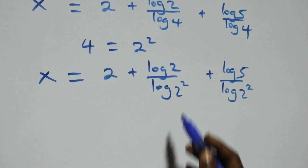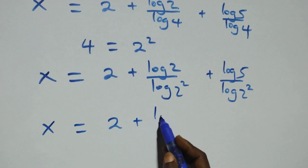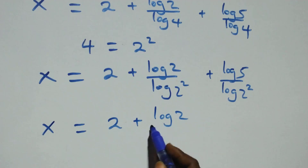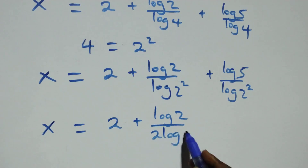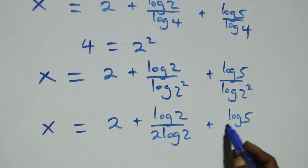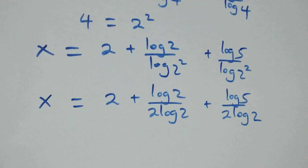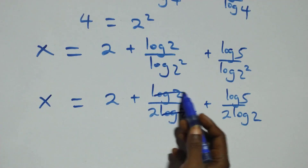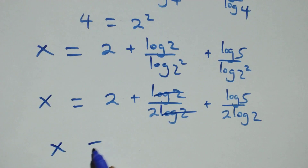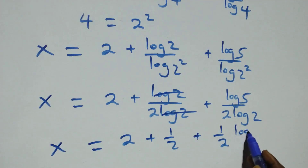We have x equals to log 2 plus log 5 over log 2. From here, we have log 2 cancel each other. That is, x equals to log 5 over log 2.